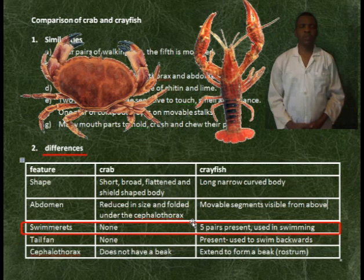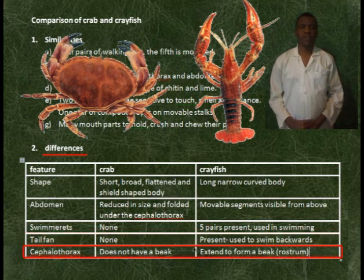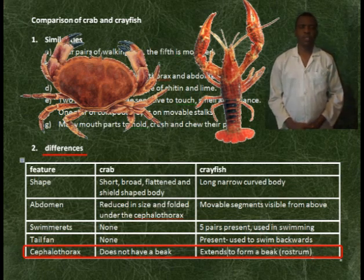The crab does not have swimmerets, while the crayfish has five pairs of swimmerets used for swimming. The crab does not have a tail fan, while the crayfish has a tail fan used for swimming backwards. The cephalothorax of the crab does not have a rostrum or beak, while the cephalothorax of the crayfish extends to form a beak.